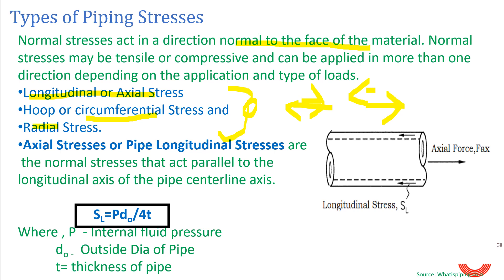Longitudinal or axial stress acts parallel to the longitudinal axis — the pipe centerline axis. It is given by the formula: S_L = P·D₀ / (4t), where P is the internal pressure of the fluid, D₀ is the outside diameter of the pipe, and t is the thickness of the pipe. This stress acts and tries to deform the pipe from its actual support position, and the pipe supports resist this movement.